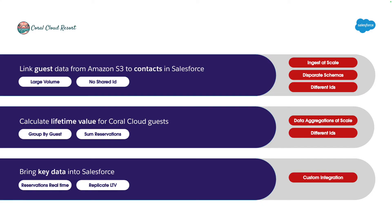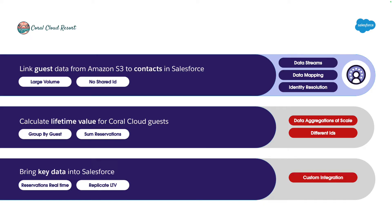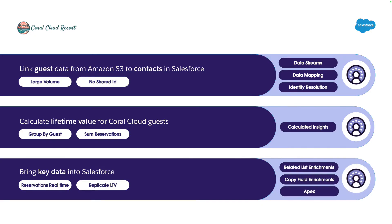Let's recap on Coral Cloud Resort's goals and map them to Data Cloud capabilities. The first goal was to link guest data from Amazon to Salesforce contact records — for that we can use data streams, data mapping, and identity resolution. To calculate lifetime value for Coral Cloud guests, we can use calculated insights. And to bring key data into Salesforce, we can use related list enrichments, copy field enrichments, and Apex.